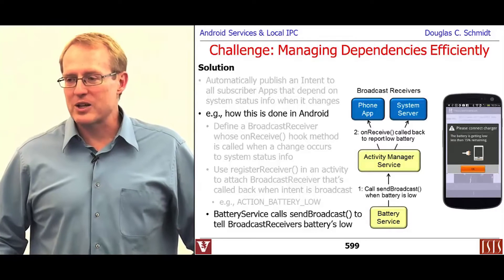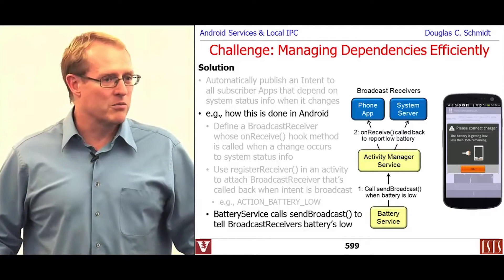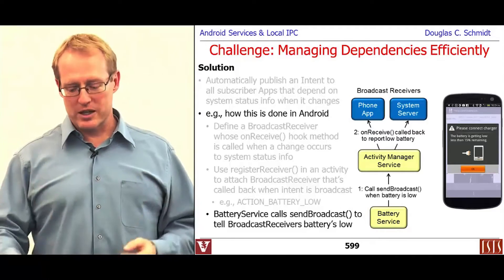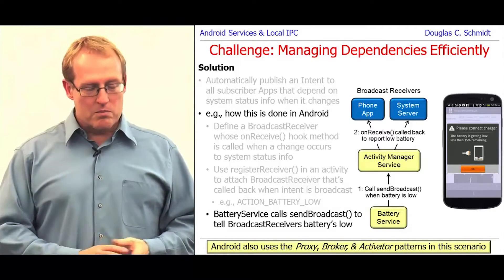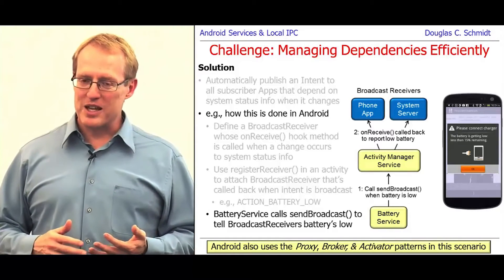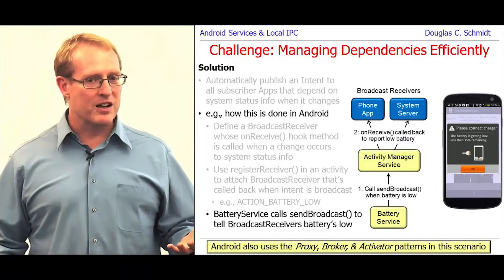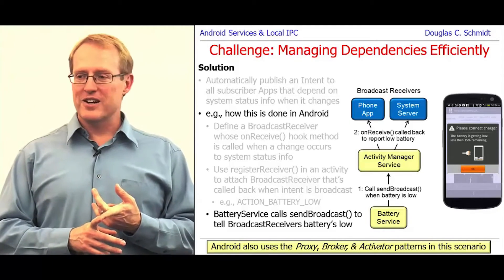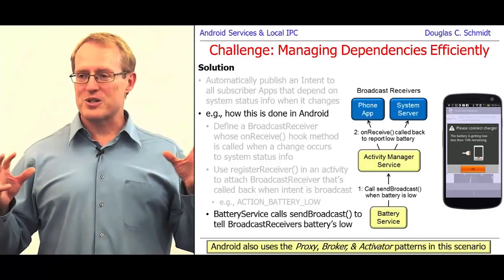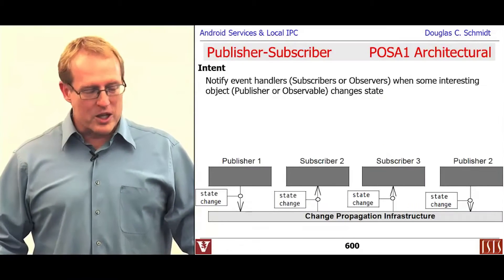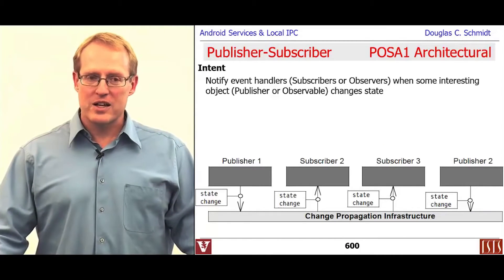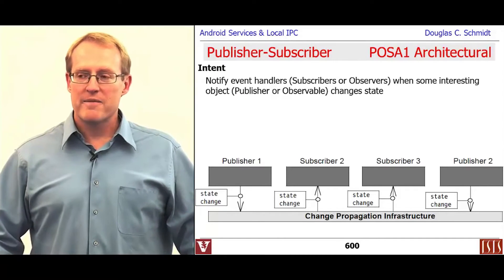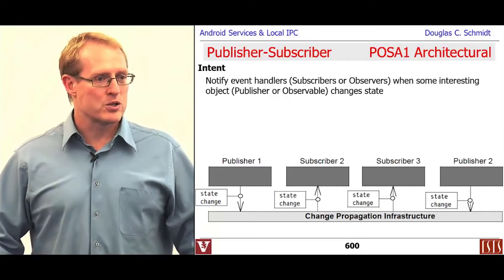Battery is not the only resource that might get low — memory can get low too, so you may have other kinds of things to keep track of memory availability as well. Just as a quick note, this example has a variety of patterns involved — activators, brokers, proxies, and all kinds of other things. But the particular pattern we're talking about here that does this magic callback approach when something happens that you're interested in — that pattern is called the publisher-subscriber pattern.